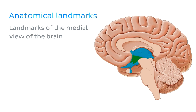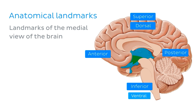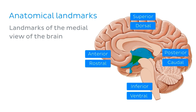To cover these structures briefly, let's group all the surrounding structures into four regions: superior, inferior, anterior, and posterior. These directions can also be classified as dorsal, ventral, rostral, and caudal, respectively.